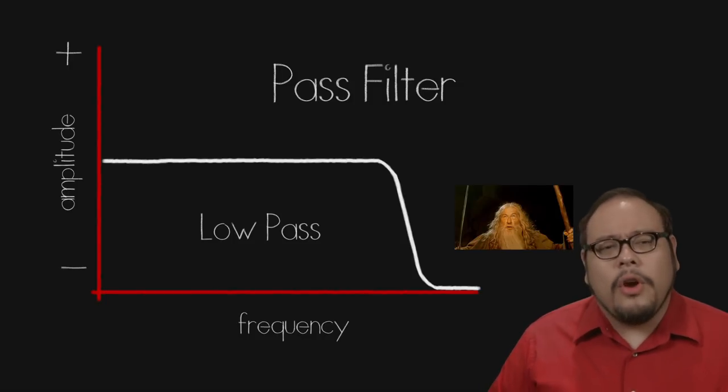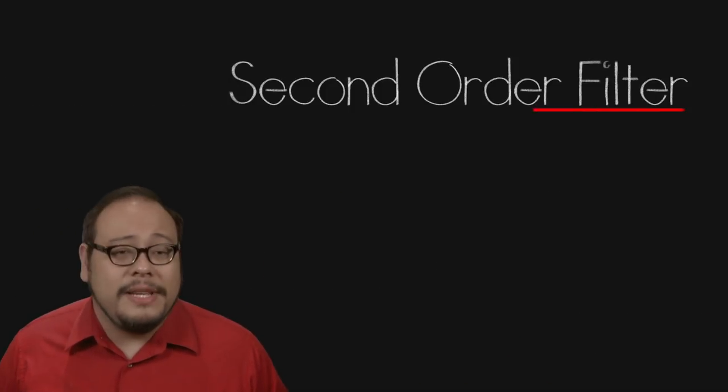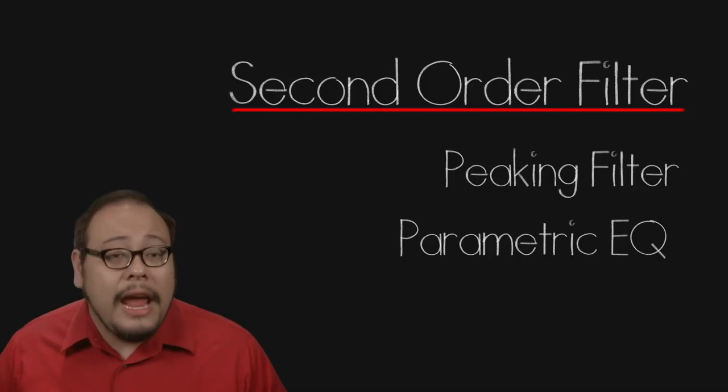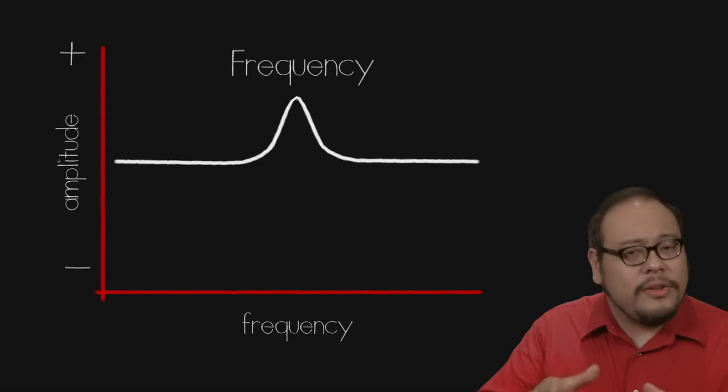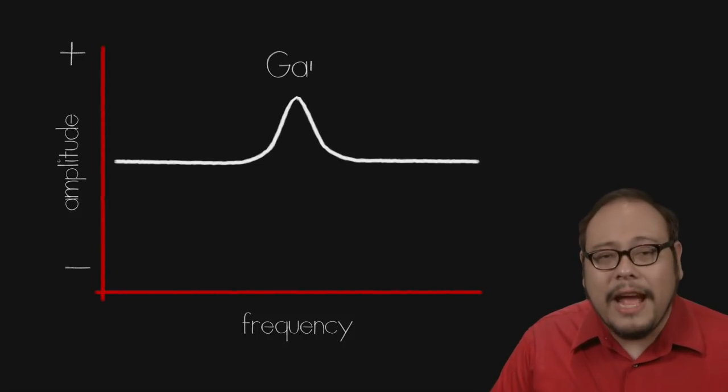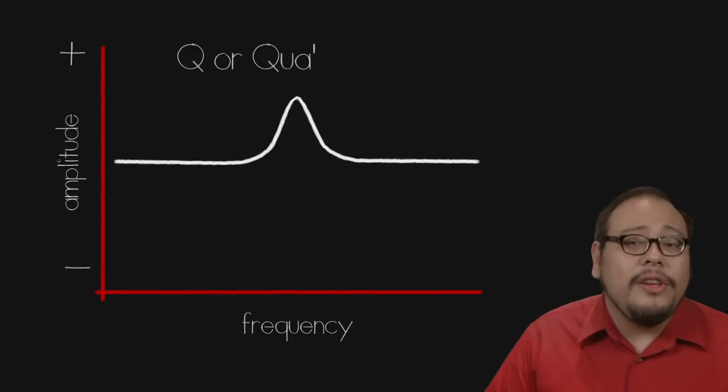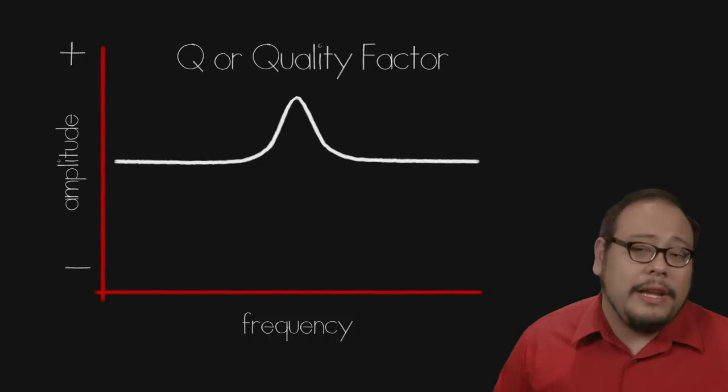But what if we want to target a more specific range of frequencies? Well that's where a second order filter comes in. This is called a peaking filter or parametric equalizer and has three settings. The frequency which is what frequency you want to target. The gain how much you want to boost or cut that frequency. And the Q or quality factor which is how wide the parabola of the adjustment will be.